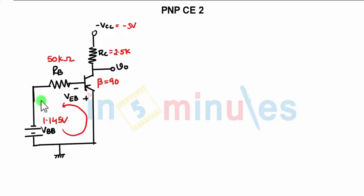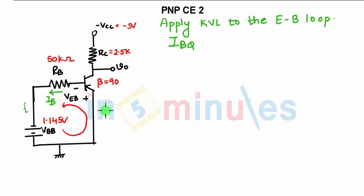So how will the circuit look like? The circuit will look like this. The AC source which was here has been removed. So in order to find IBQ, what we do? We apply KVL to the emitter base loop. So what will be the equation? Current flowing through RB is nothing but IB. So I can write IBQ. Total voltage. This is negative. This is positive.